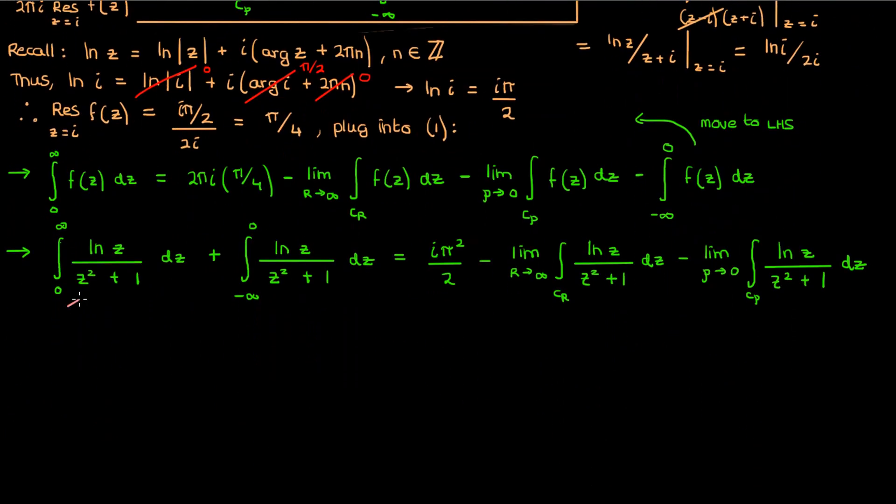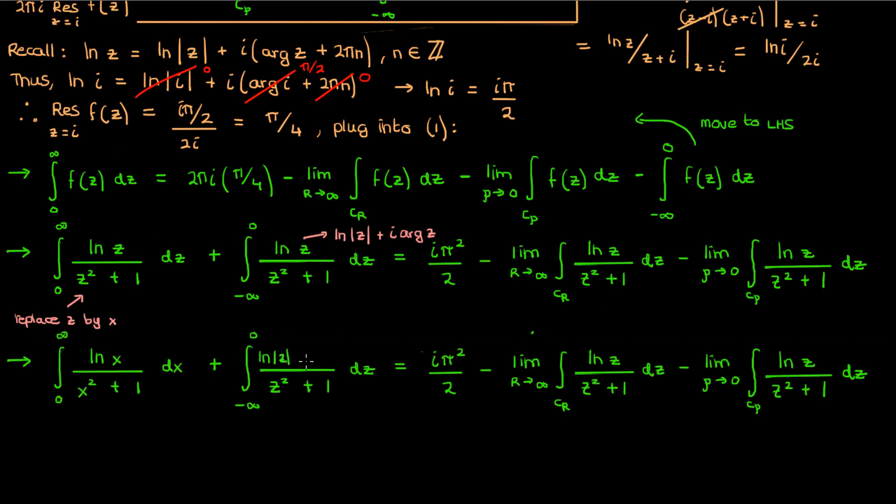Now in this first integral on the left, I'm just integrating over the positive real numbers, so I can take out the z and replace it by a simple real number x. For the second integral, I can use the definition of the complex logarithm to write out the numerator as follows, as the ln of the modulus of z plus i times the argument of z. Again, I'm not including the 2 pi n here because this logarithm has been modified to be single valued. We're only using a single branch. For this integral, we're also integrating over the reals, so again I can replace z by x.